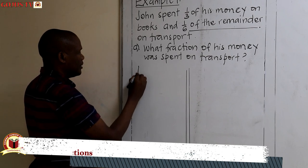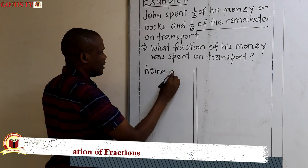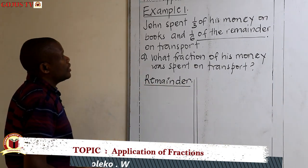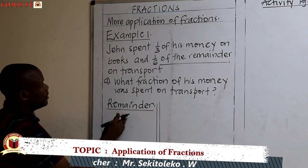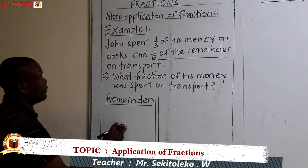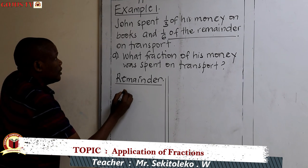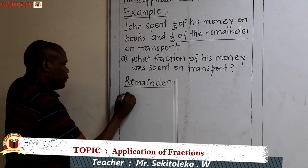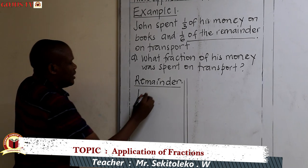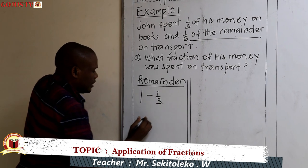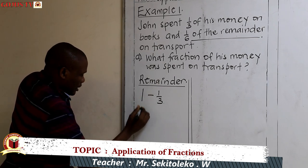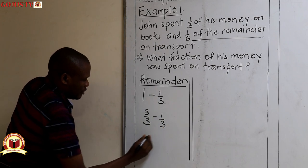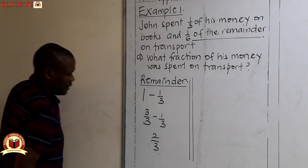First, we obtain the remainder. After spending a third of his money on books, what remained? The total in terms of fractions is taken as one. So we have one minus what was spent on books, which is one-third. Taking denominator three, one whole is three out of three, minus one out of three. This gives us two out of three — that's the remainder.